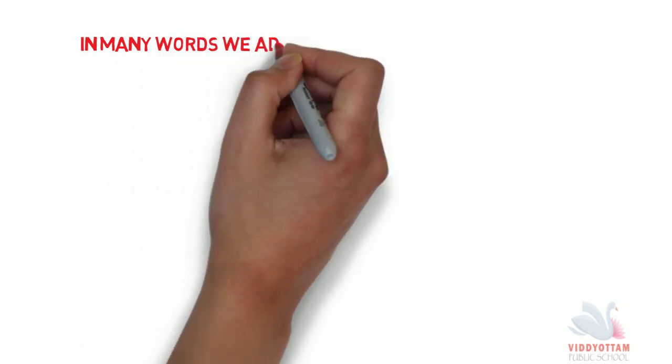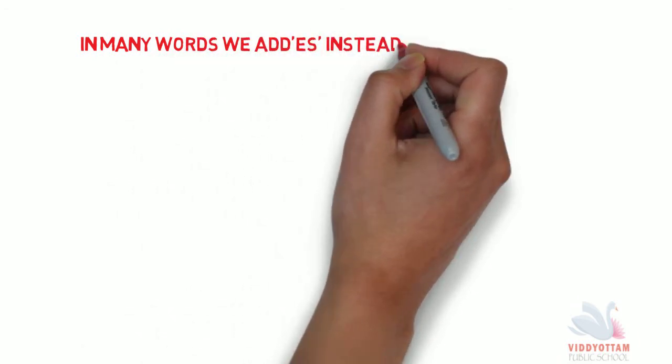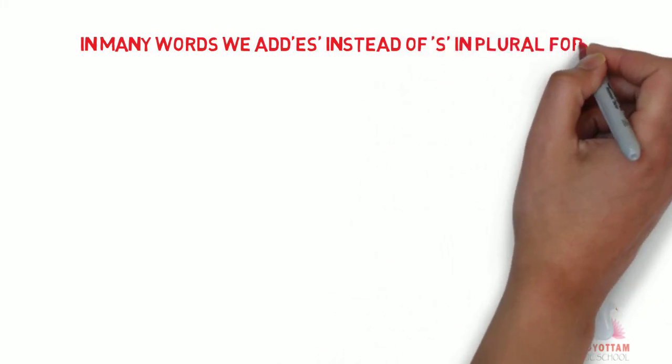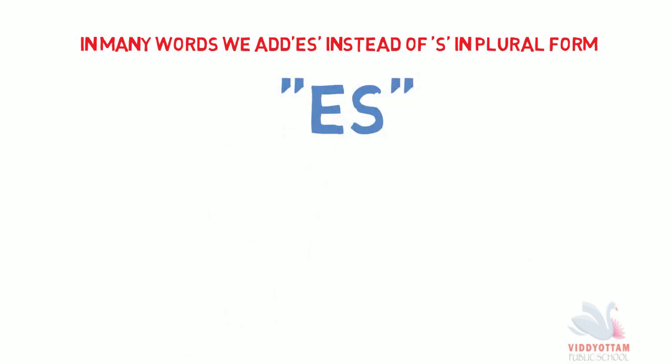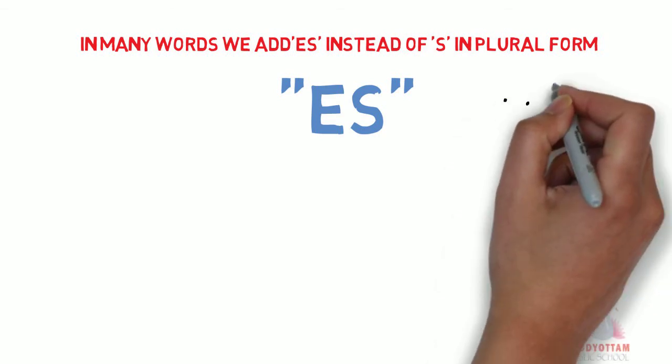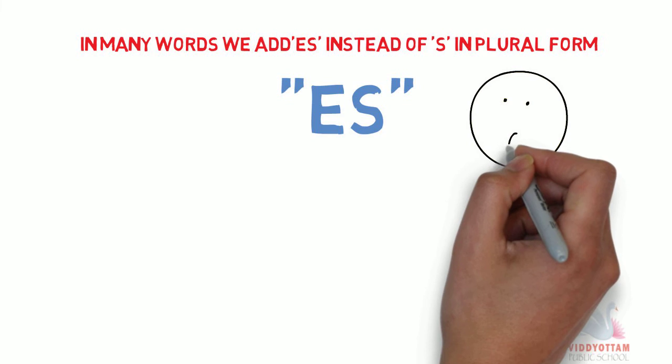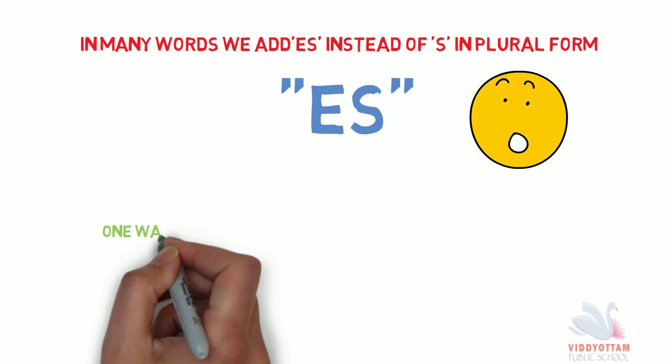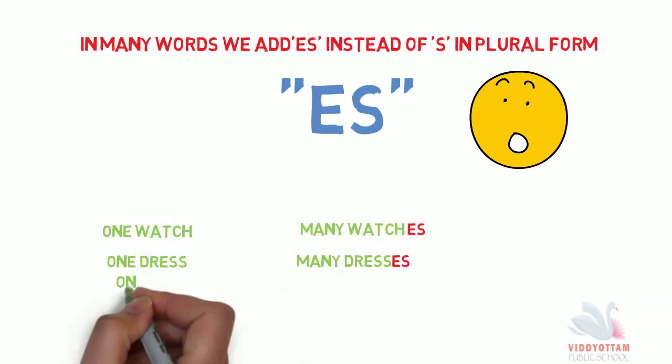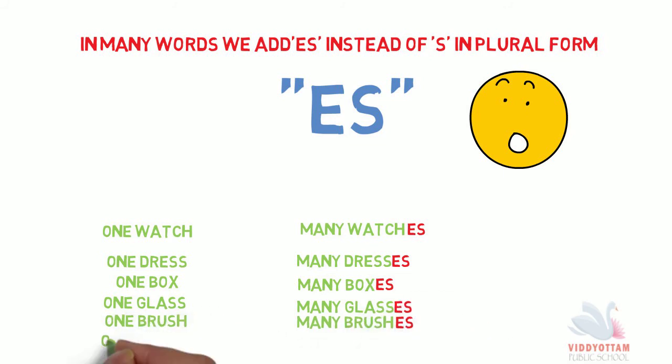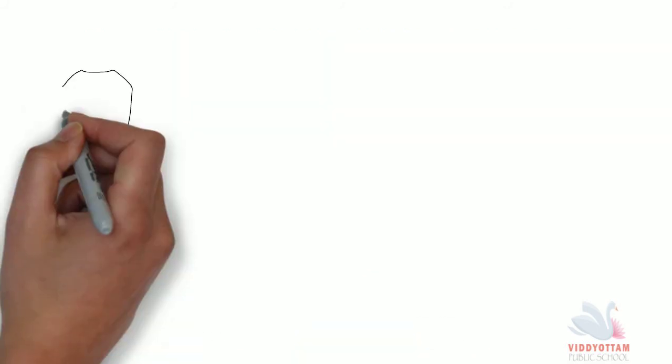Again, apart from S, there are many words in which we add ES to denote their plural form. Some naming words end in ES when they mean more than one. There are some words for whose plural form we don't add S, we add ES, like one watch, many watches; one dress, many dresses; one box, many boxes; one glass, many glasses; one brush, many brushes; one bench, many benches.